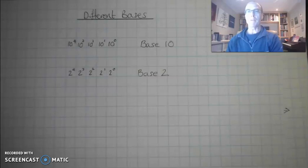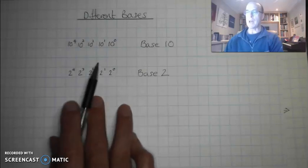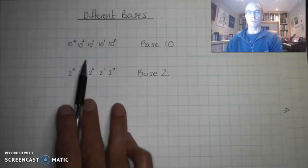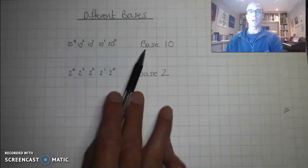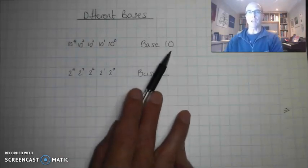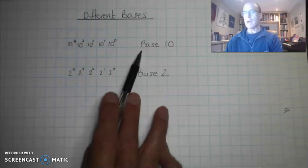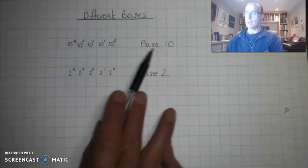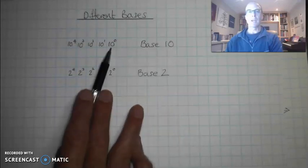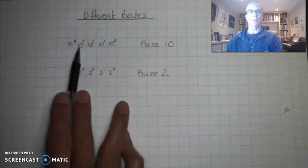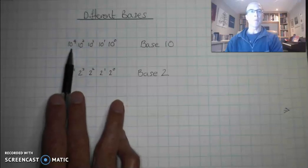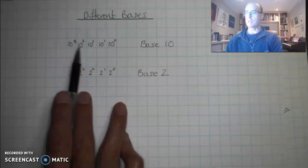In this video we're going to have a look at different number systems. We're all familiar with our decimal system, otherwise known as base 10. It's called base 10 because each of the positional values in there have a base of 10.